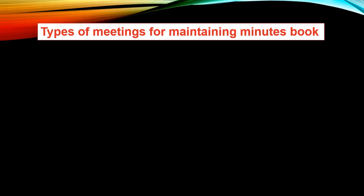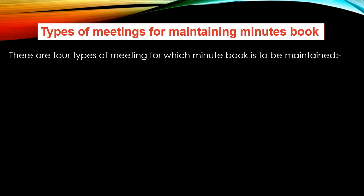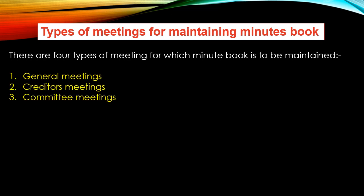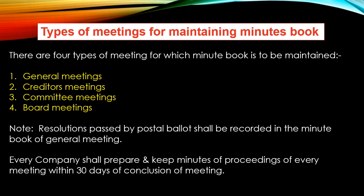Now the types of meeting for maintaining the minutes book. Ab woh kaun kaunsi meetings hooti hain jinke liye minutes book ko maintain karna mandatory hai. There are four types of meeting for which minute book is to be maintained: first is general meeting, second is creditors meeting, third is committee meeting, and the fourth one is board meeting. Resolutions passed by the postal ballot shall be recorded in the minute books of the general meeting.